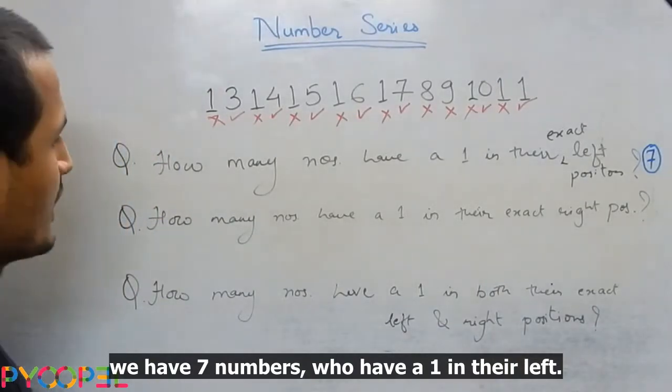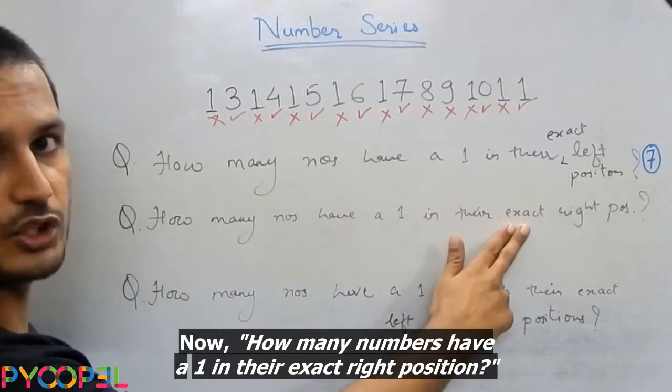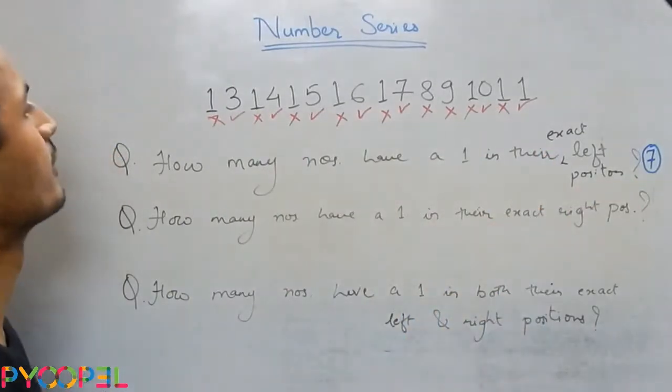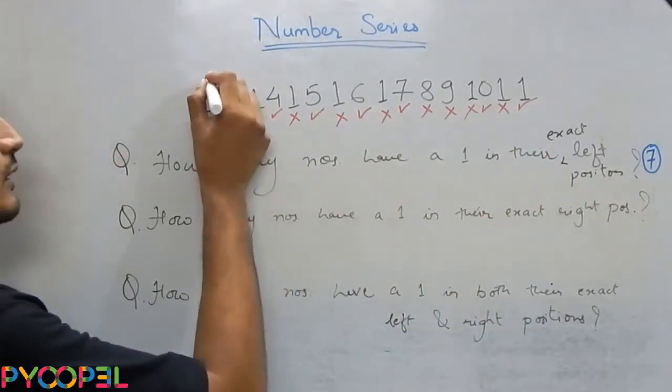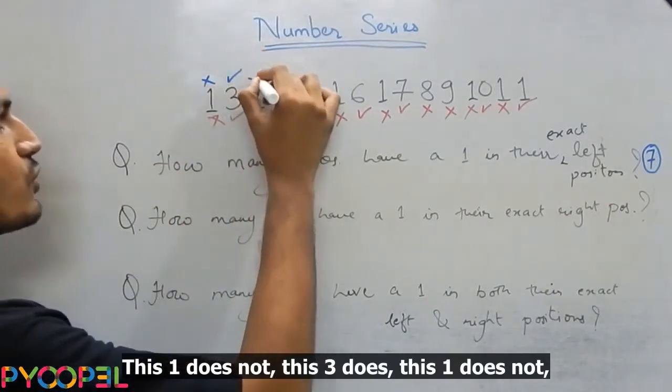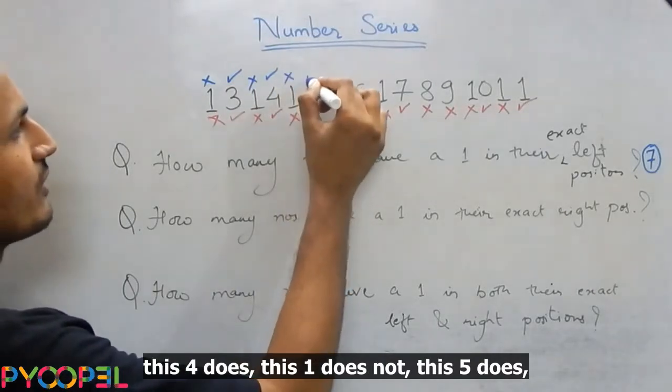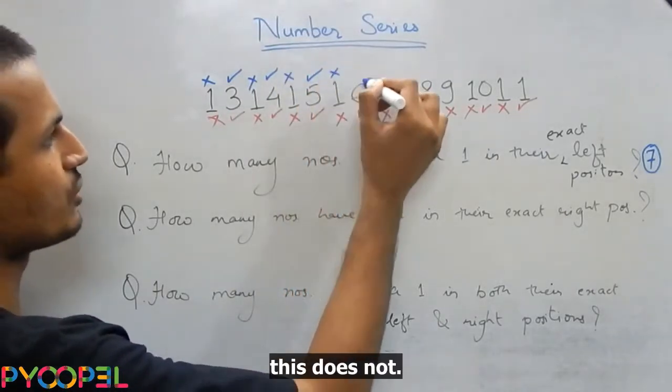Now, how many numbers have a 1 in their exact right position? Okay, this 1 does not. This 3 does. This 1 does not. This 4 does. This 1 does not. This 5 does. This does not.